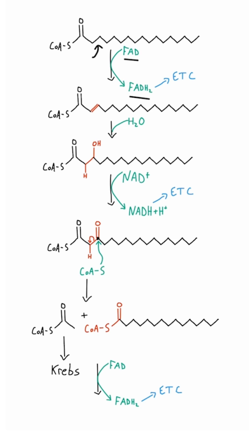This oxidation turns the carbon chain bond into a double bond, which is a classic sign that oxidation has occurred. Next, a water molecule is added across that bond, adding an OH and an H. After that, NAD+ gets reduced to NADH, which goes to the electron transport chain. Since NAD+ was reduced, the bond to the OH gets oxidized into a double bond to oxygen — another classic sign of oxidation.